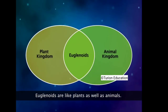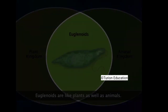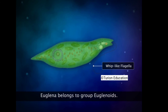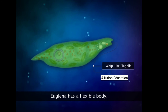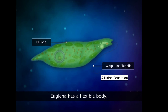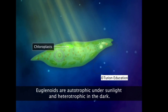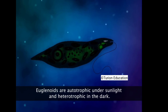One group of protists resembles both plants and animals — the euglenoids. A common example is Euglena, which possesses flagella for locomotion. Euglena lacks a cell wall and instead contains a protein-rich layer called the pellicle, making its body flexible. Euglenoids carry out photosynthesis in the presence of sunlight, but in the dark they behave like heterotrophs, engulfing other organisms.